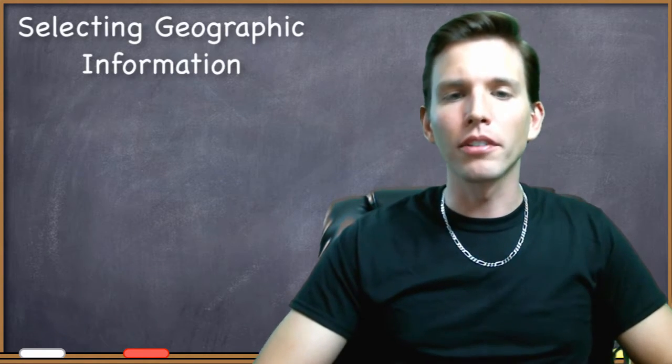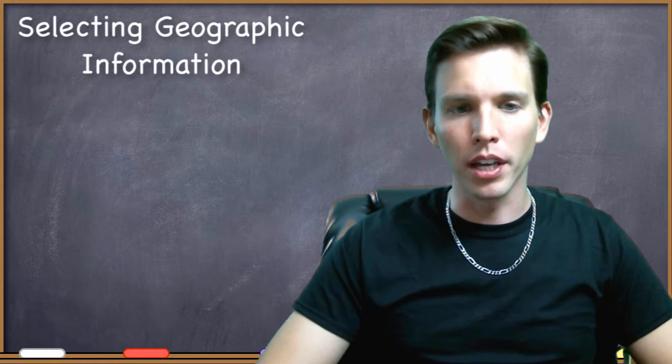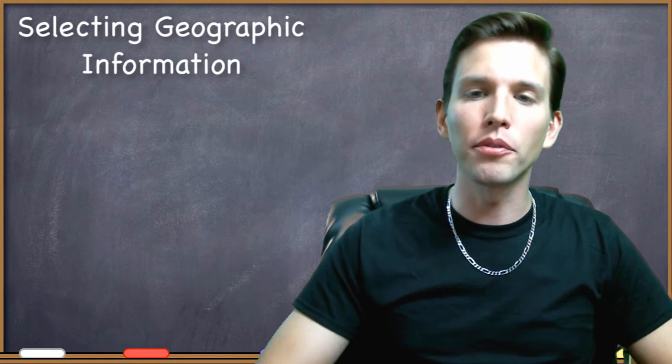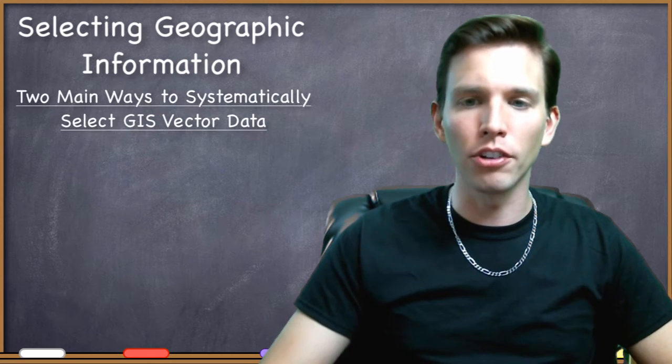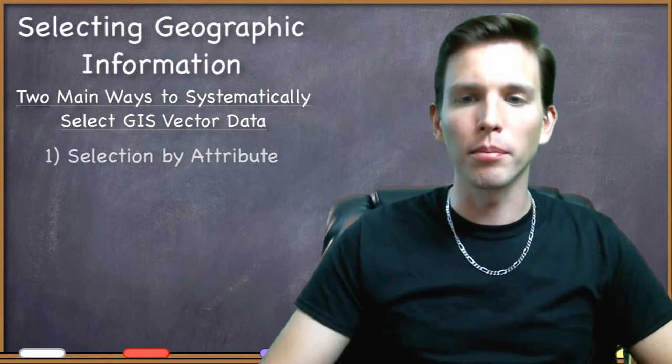When we left off, we were talking about the Core GIS Vector Toolkit, and within that toolkit we have two different ways to systematically select GIS data by attribute and by location.